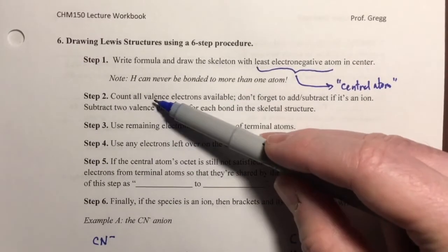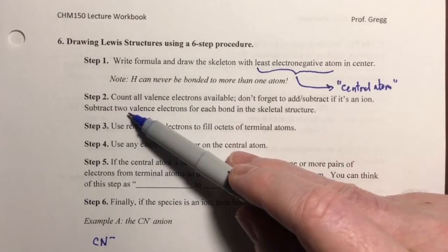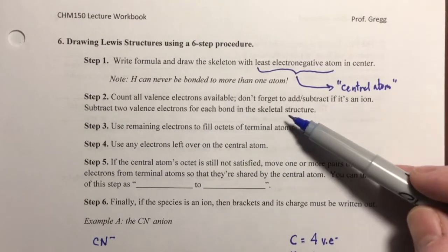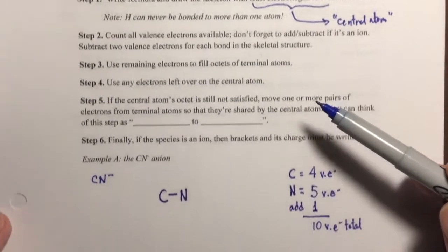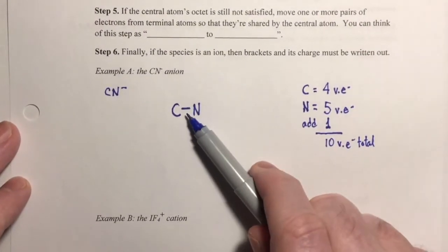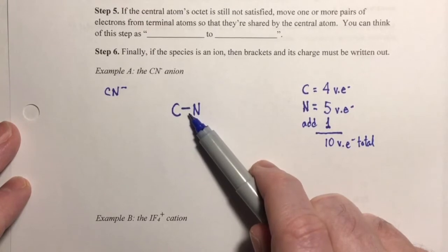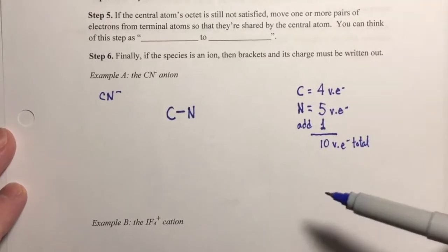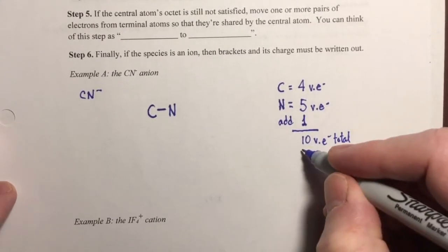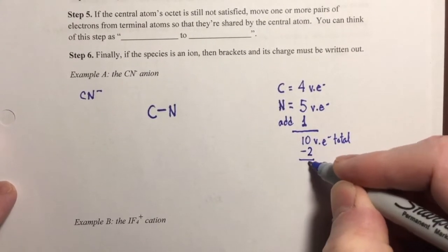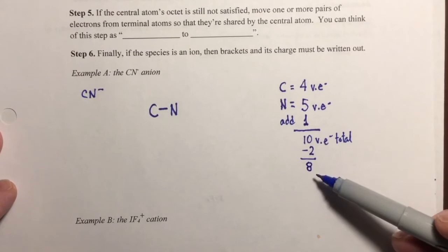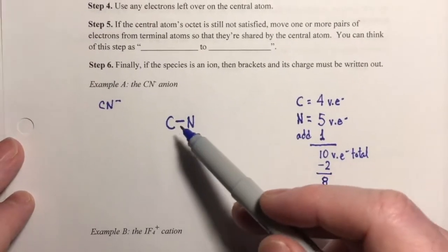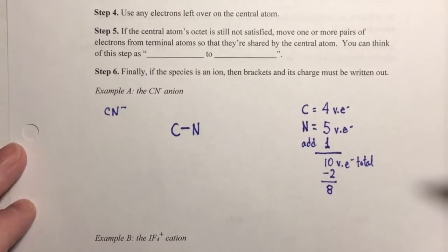Step two also says to subtract two valence electrons for each bond in the skeletal structure. I have one bond in the skeletal structure, which means I've already used two of my valence electrons for that bond. So I subtract them from my total, and now I have eight valence electrons remaining that need to be distributed in this Lewis structure.